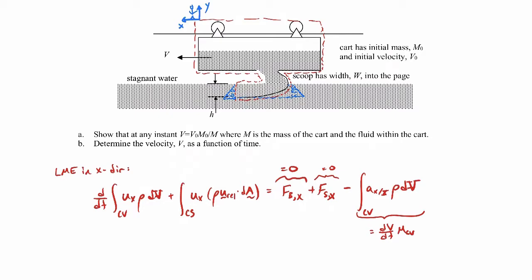Now let's focus on the momentum flux term. The ux is the velocity of the fluid as it crosses the control surface, entering the control volume through the scoop. As we stand on the coordinate system moving with the control volume, it looks like a velocity v coming in toward the right. So ux is minus v, because v is in the minus x direction with our coordinate system.